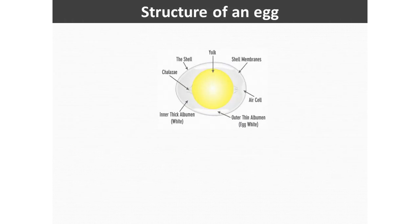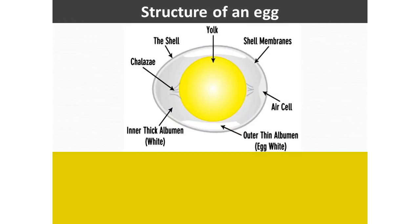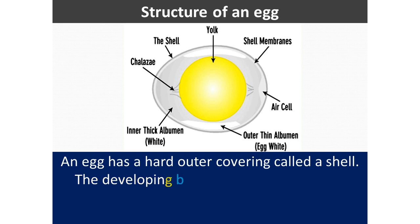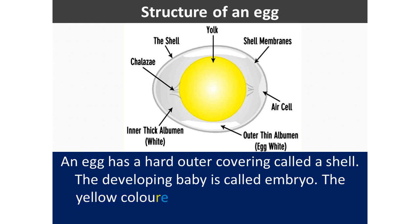Structure of an Egg. An egg has a hard outer covering called a shell. The developing baby is called an embryo. The yellow-colored yolk provides food for the growing baby.